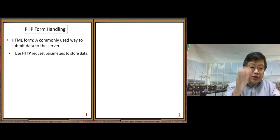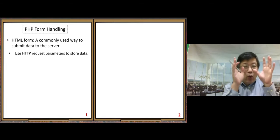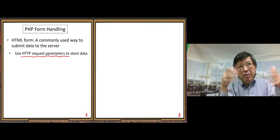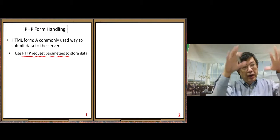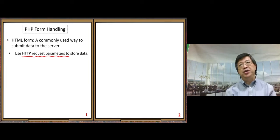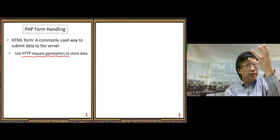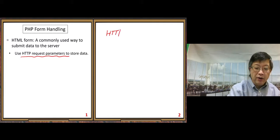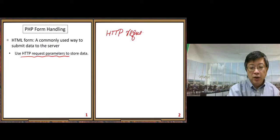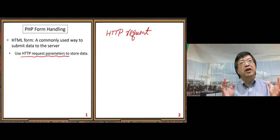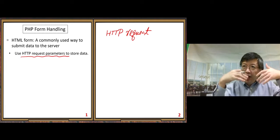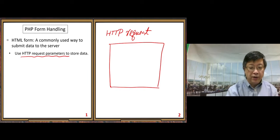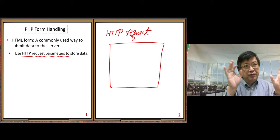We use HTTP request parameters to store data. In a previous video I explained HTTP request parameters. Briefly: we use HTTP protocol, which has a request part and a response part. Here, let's just look at the request part, because when we send data we use the HTTP request. Based on the rules in the protocol, the structure of an HTTP request has three components.